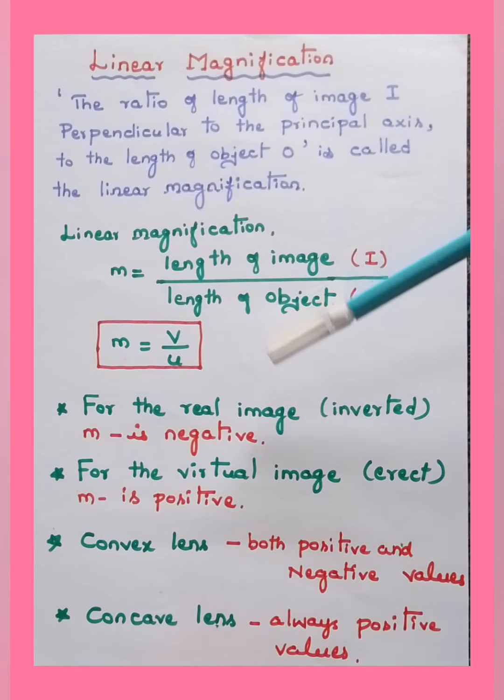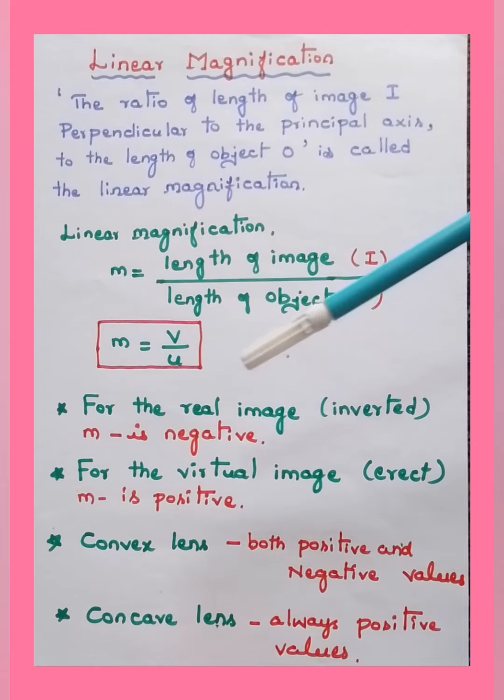Based on the nature of the image, we can write whether the linear magnification is positive or negative. If the image is real or inverted, linear magnification is negative. If it is a virtual or erect image, linear magnification is positive.